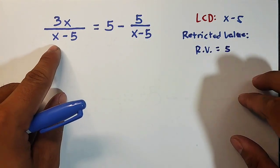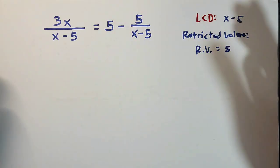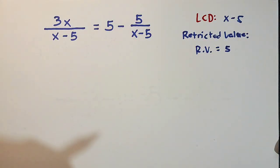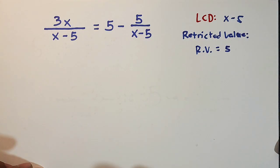Because if you will plug in 5 here and here, your denominator will become 0. And remember, if you have a fraction with 0 denominator, automatic that is undefined. So okay, we are done with LCD and restricted value.